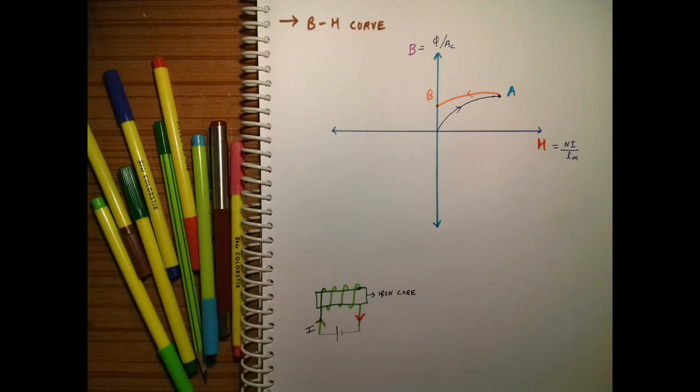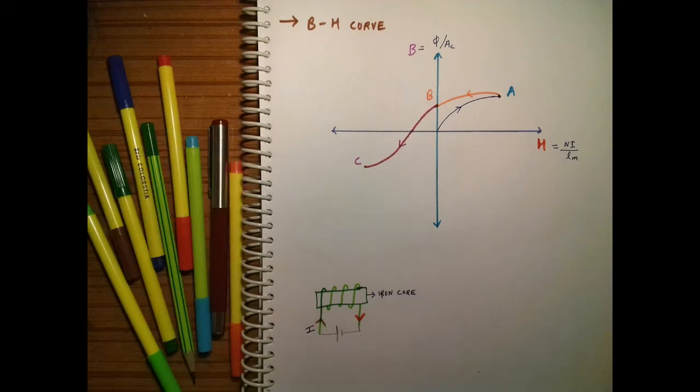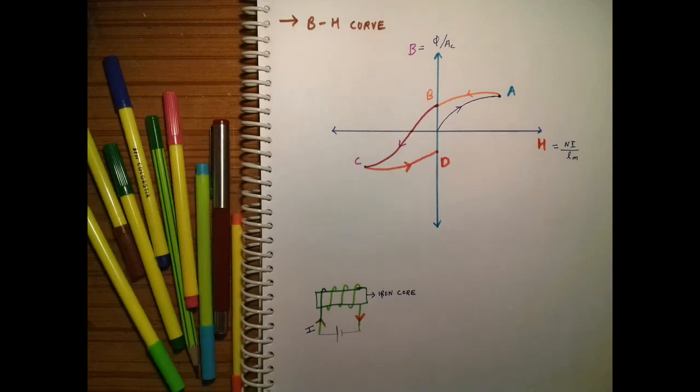From point A, as we decrease the current gradually to zero, the characteristic comes to point B. We can see that there is still some magnetic flux on the core, as it does not come back to the origin. Now we reverse the battery — this means the current is now negative with respect to the assumed positive direction. The characteristic comes down from B to C.